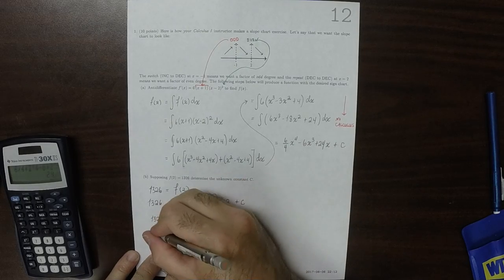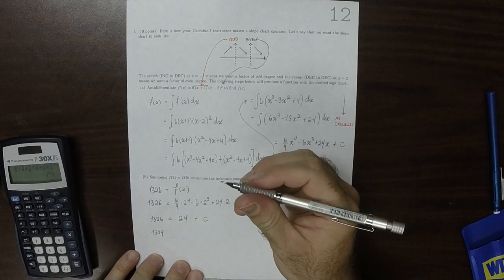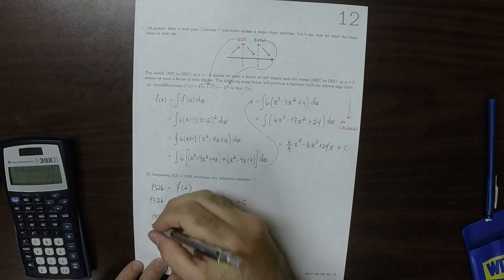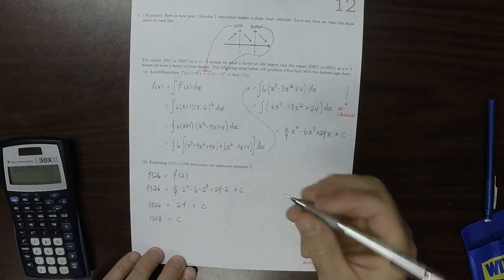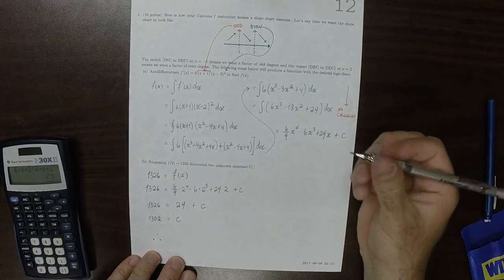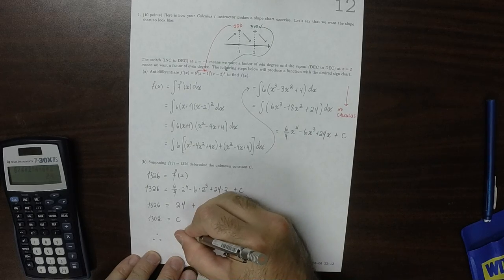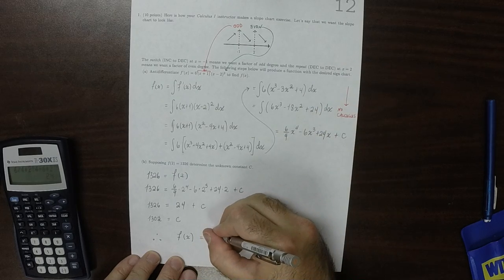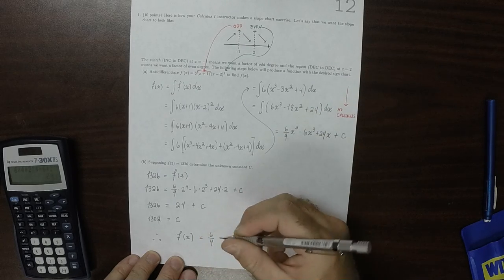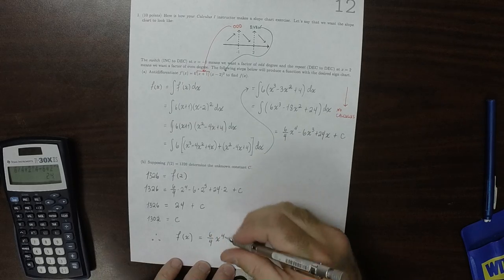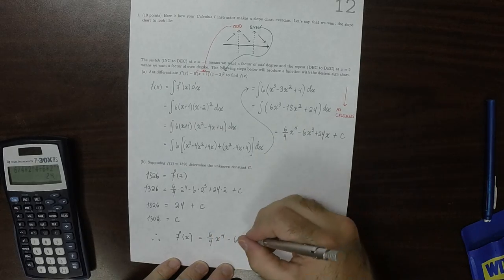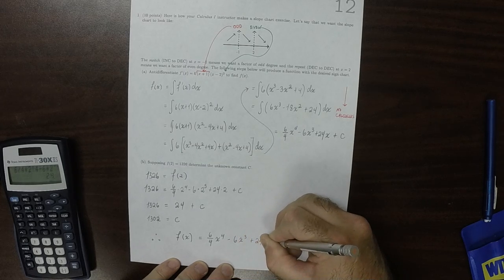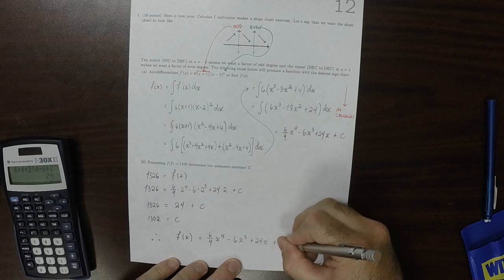So 1302. 1302 is c. And therefore, the answer to the question is that f of x is, I'll simplify the 6 over 4, I'll just leave it. Who cares? 6 over 4, x to the 4 minus 6 x to the 3 plus 24x plus 1302.